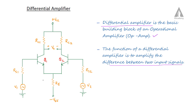We have two emitter resistors RE1 and RE2. RE1 is the emitter resistor of Q1 and RE2 is the emitter resistor of Q2. Since the transistors are identical, RC1 equals RC2, so we can write them both as RC.